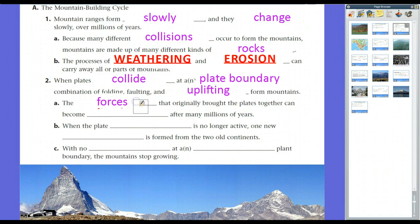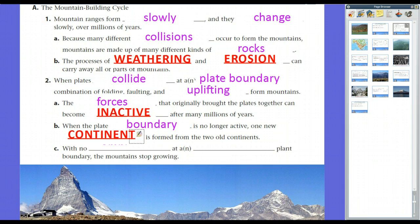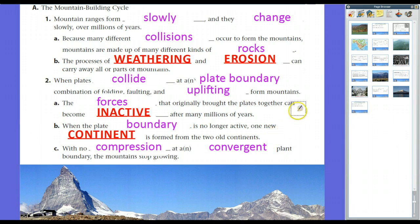The forces that originally brought the plates together can become inactive after many millions of years. Paleogeologists have seen throughout the history of the Earth that there have been several different continents — continents are actually chunks of smaller continents come together. The forces that brought them together have slowed down and stopped over time. So when the plate boundary is no longer active, one new continent is formed from the two old continents, and with no compression, the mountains will stop growing.